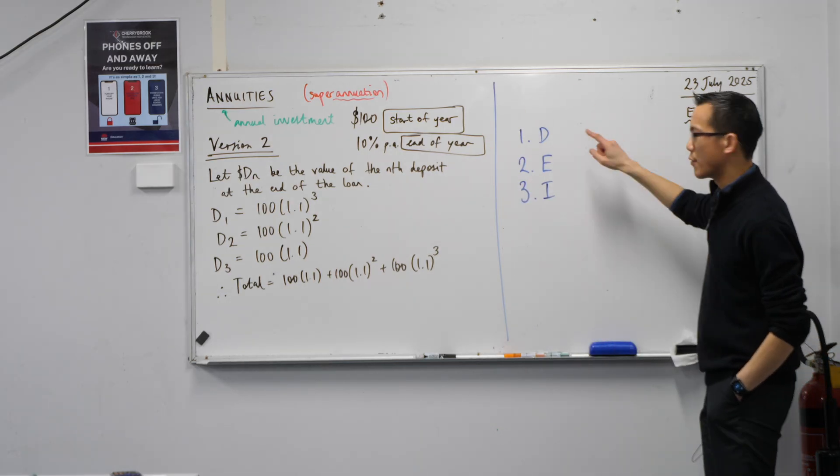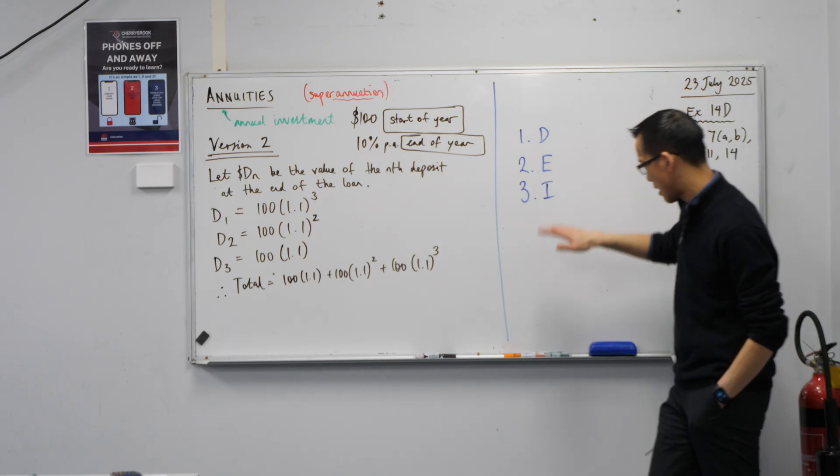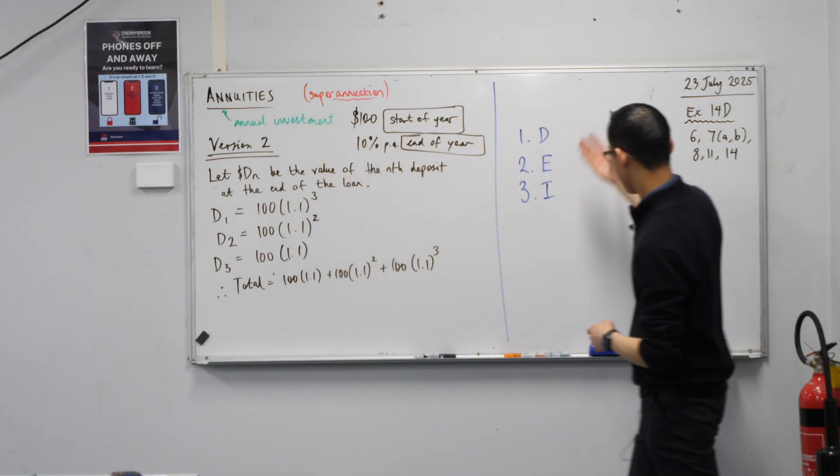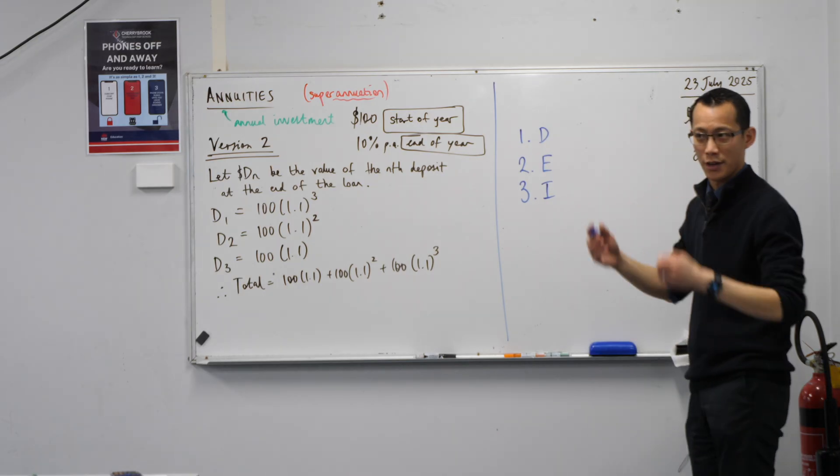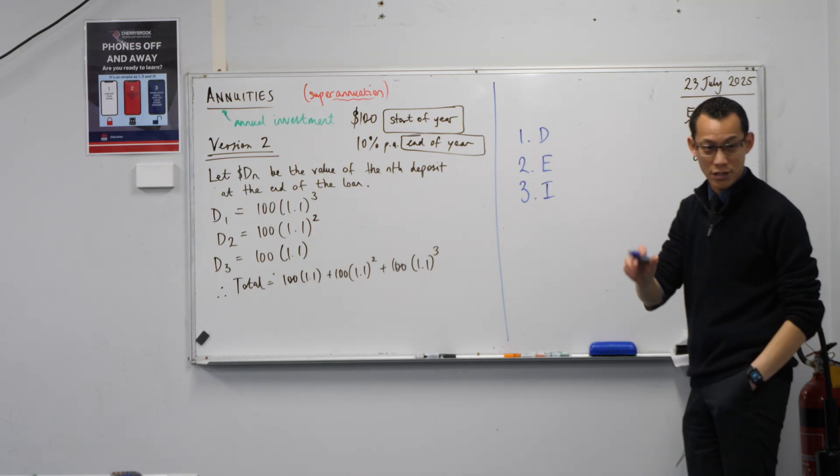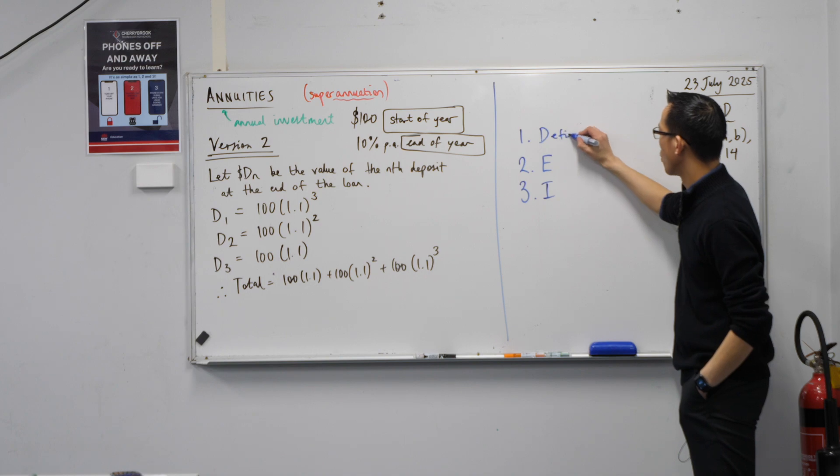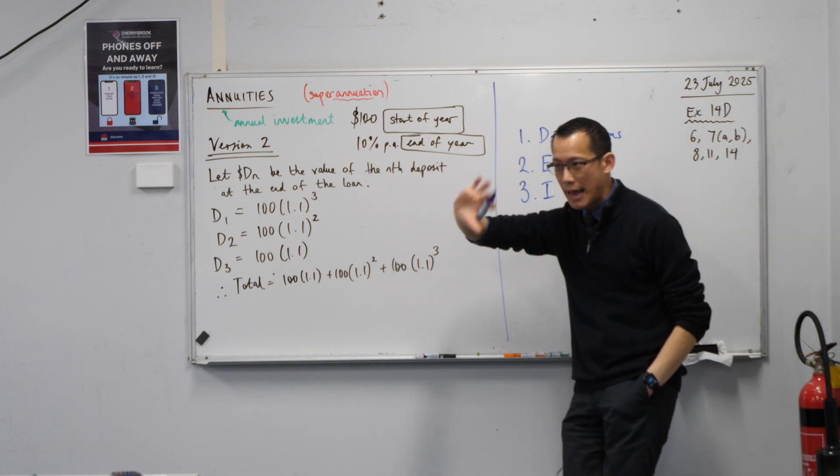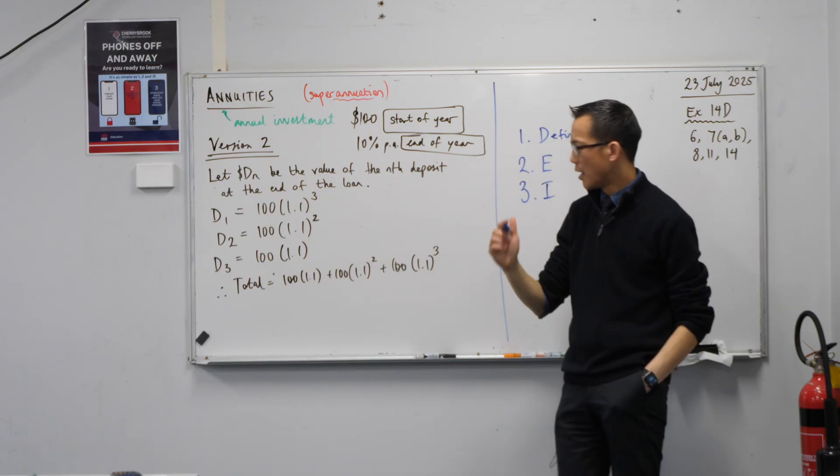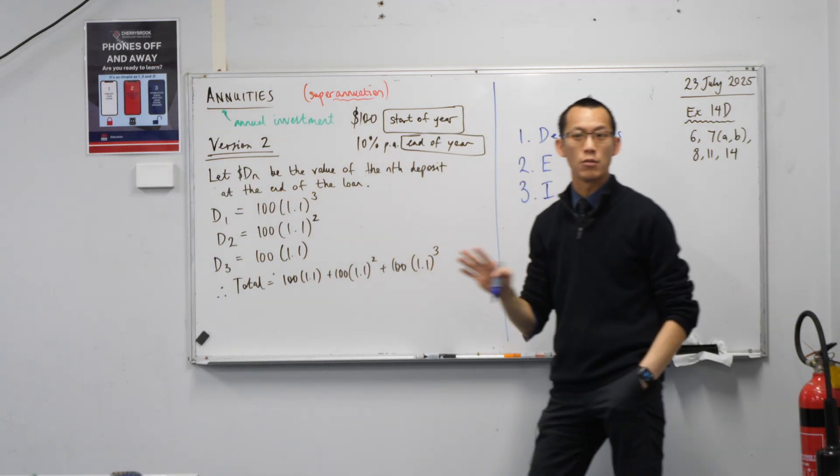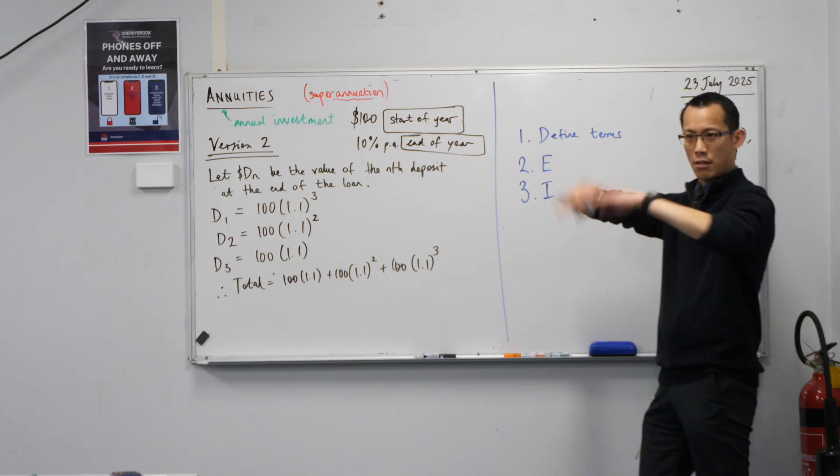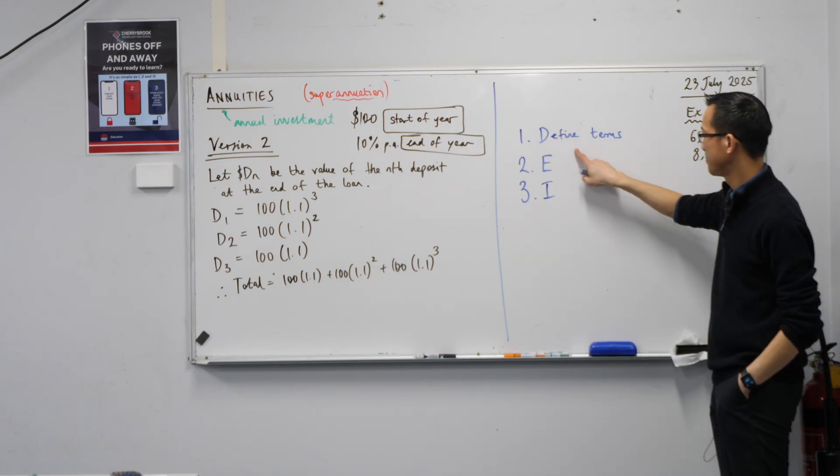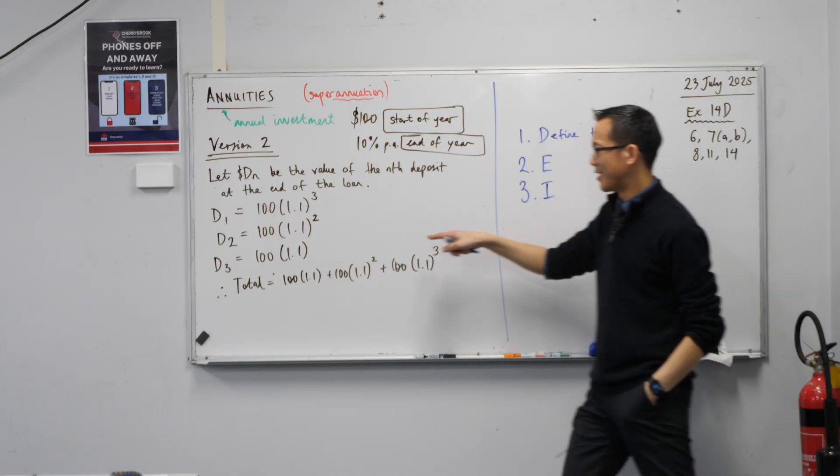Whichever version you like. Like I said, they both get perfect marks. There are three things that we did both times. And I want you to write down, this is our summary. And the acronym is a coincidence, but whatever. Step one, whichever approach you take, you must define what terms you're working with. So are you going with A_N, like the total amount? Are you talking about D, the deposit? Whatever it is, you can't just throw pronumerals around. You're the one introducing them, so you've got to define them.